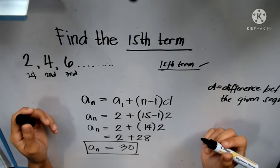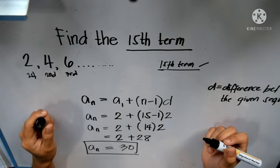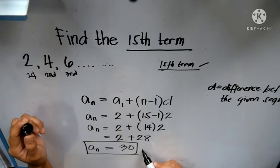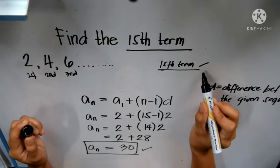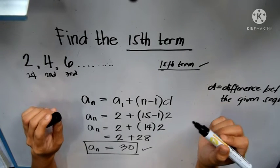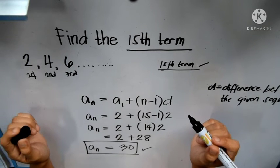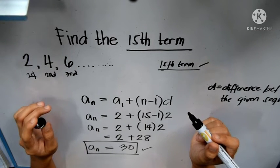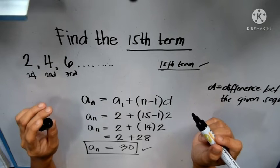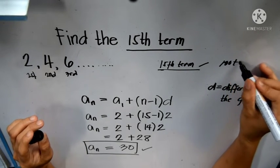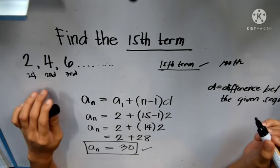In this example it's more easy to count if you really want to prove that 30 is correct as our 15th term in this number series. You can do it by counting, but in some examples or sequence problems it is difficult to count. For example, if you are asked to get the 100th term of this sequence.